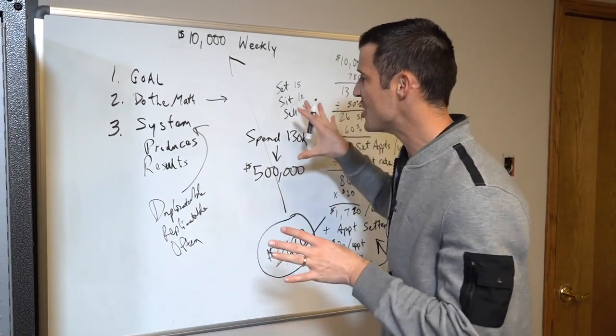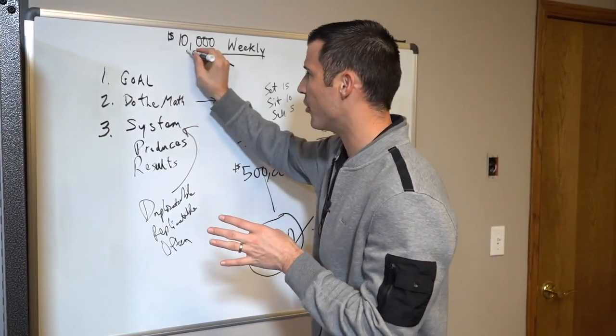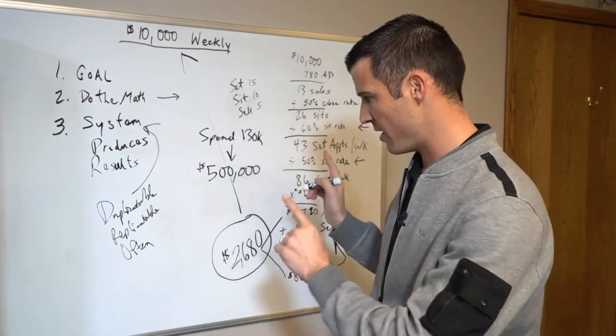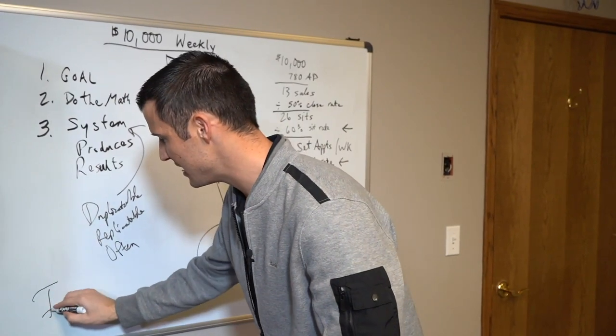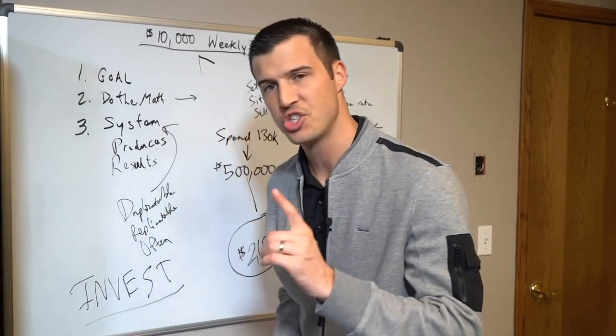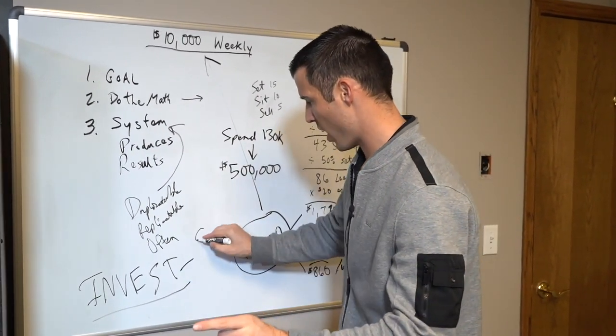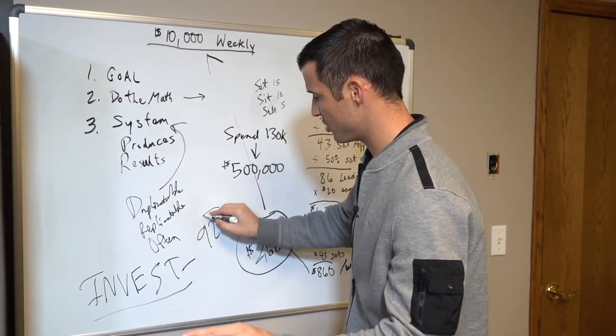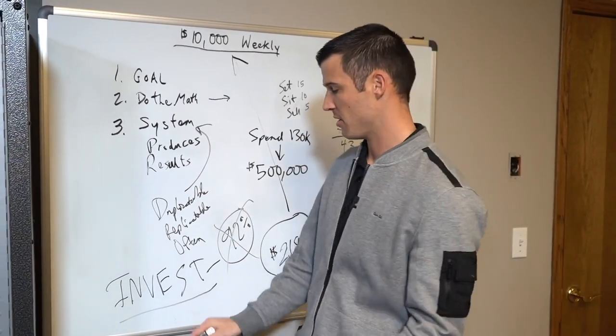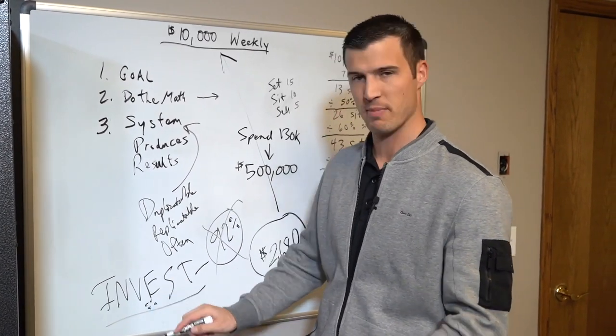Now, the main reason why an insurance agent would never be able to pull this off is because the one thing that will hold them back is actually investing in their business. Most insurance agents do not invest enough, which is why 92% of insurance agents fail within their first three years. It sucks. It's awful. It's true. But most don't invest enough in their business.